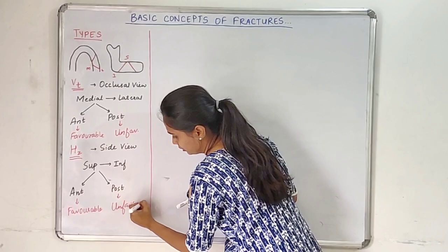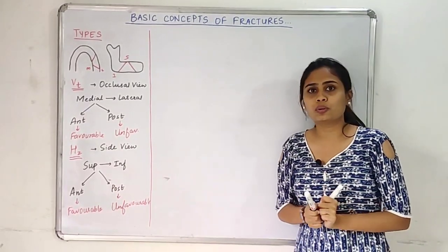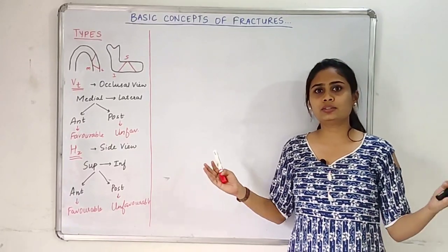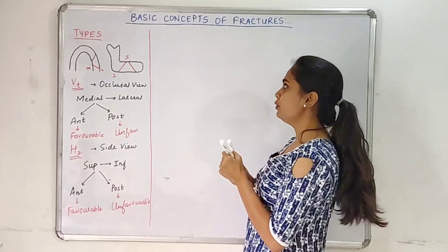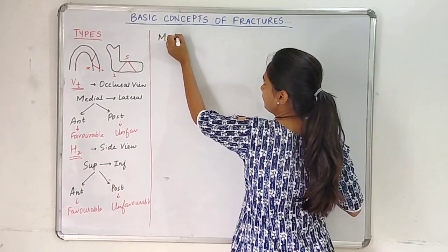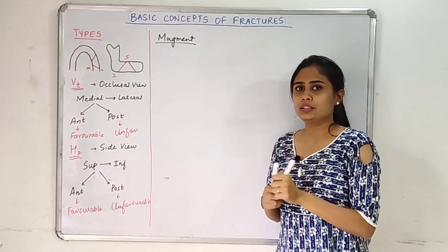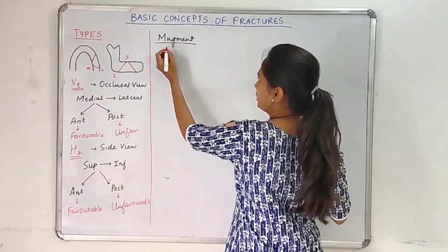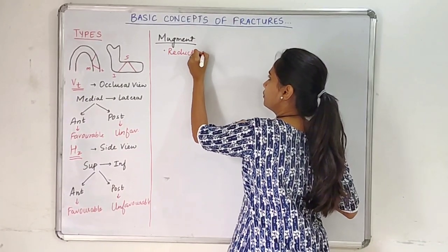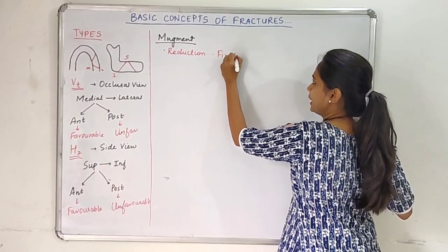I hope that is very clear. It is very easy if you learn in this way. Now we'll go about the management — how we will manage basically all kinds of fractures. There are three basic steps for managing fractures as per the guidelines: first is reduction, then fixation, and immobilization.